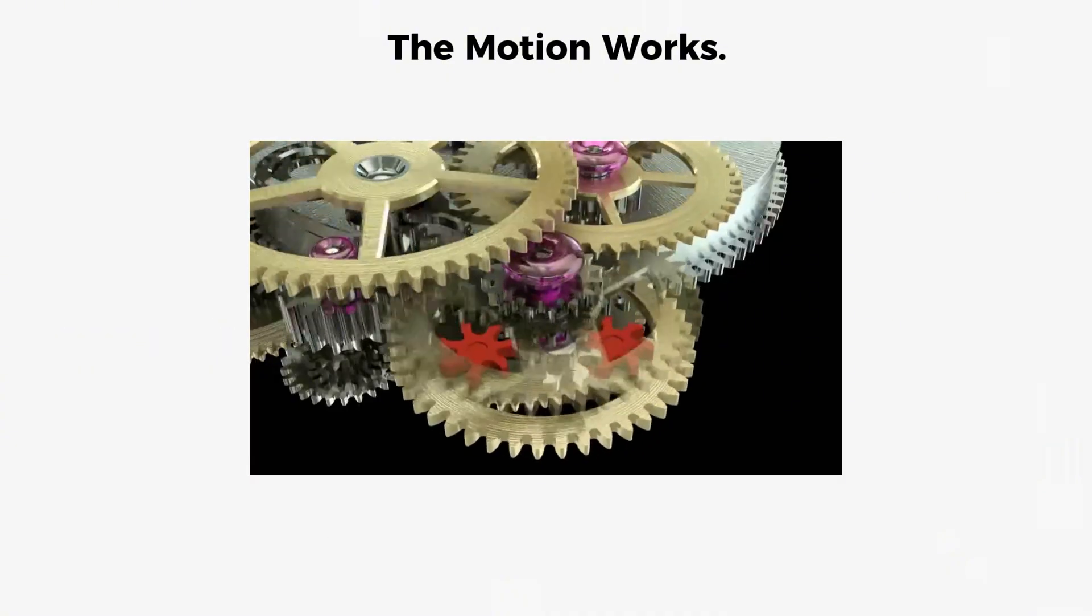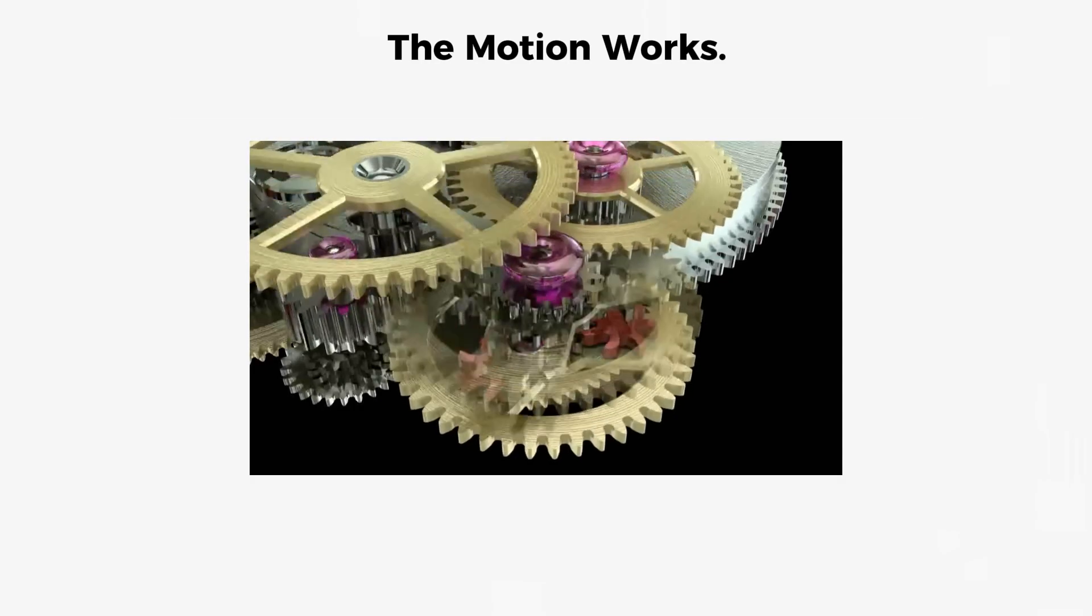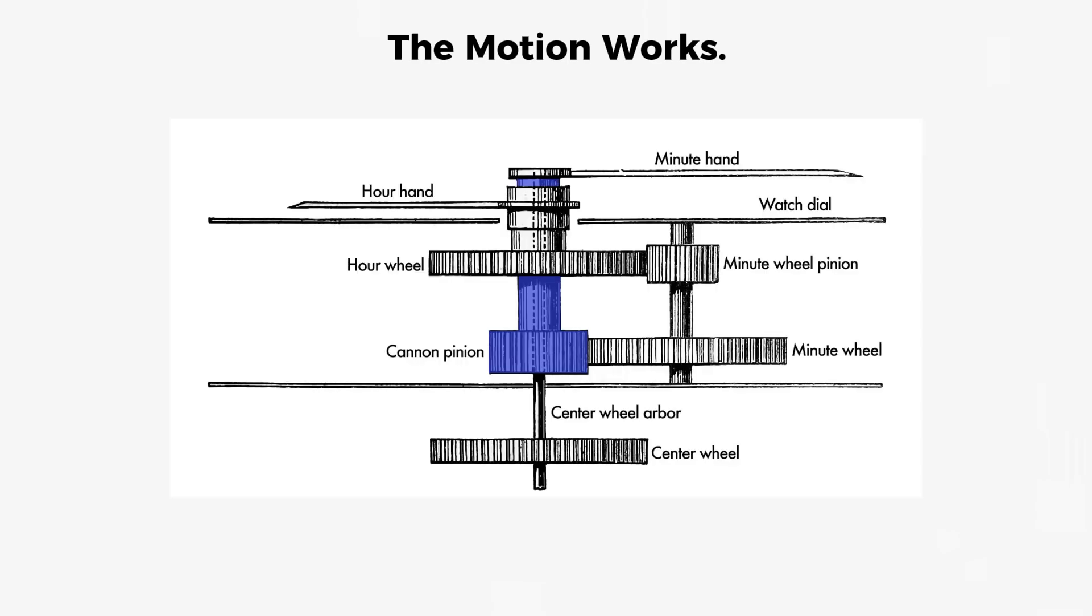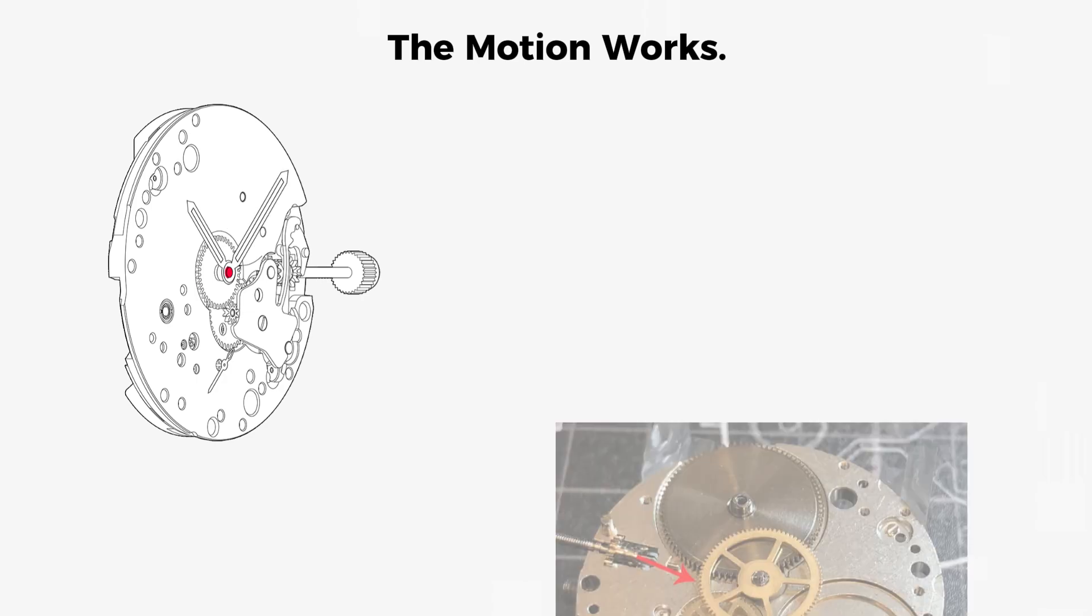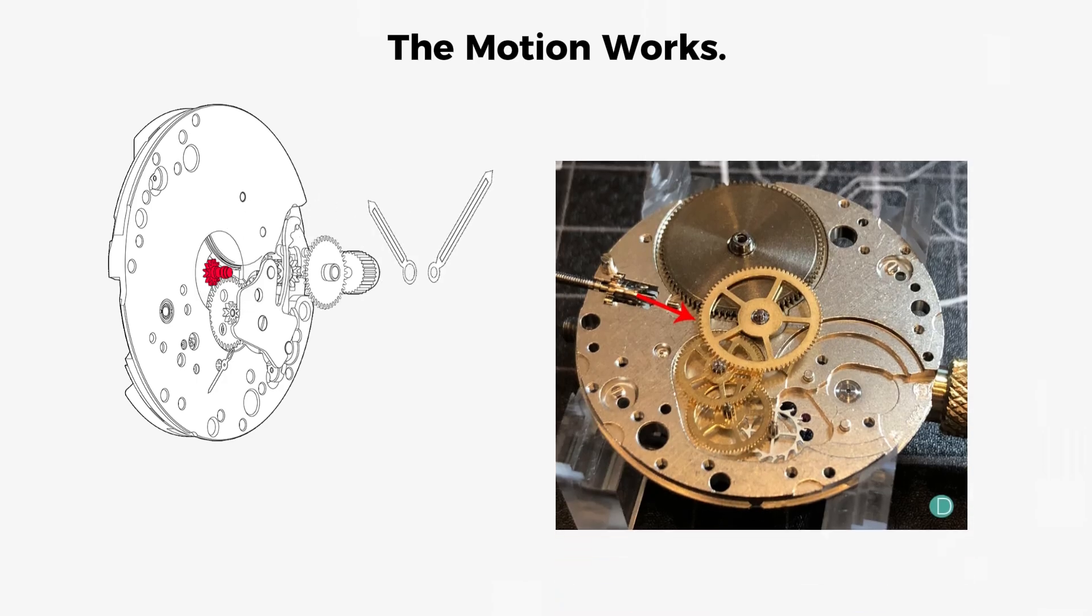The clever part is that the cannon pinion and hour wheel are press fit to the pinions that support them. This means they are held in place by friction rather than being rigidly locked. With enough force, they can slip and rotate independently without disturbing the underlying wheel train that drives them.